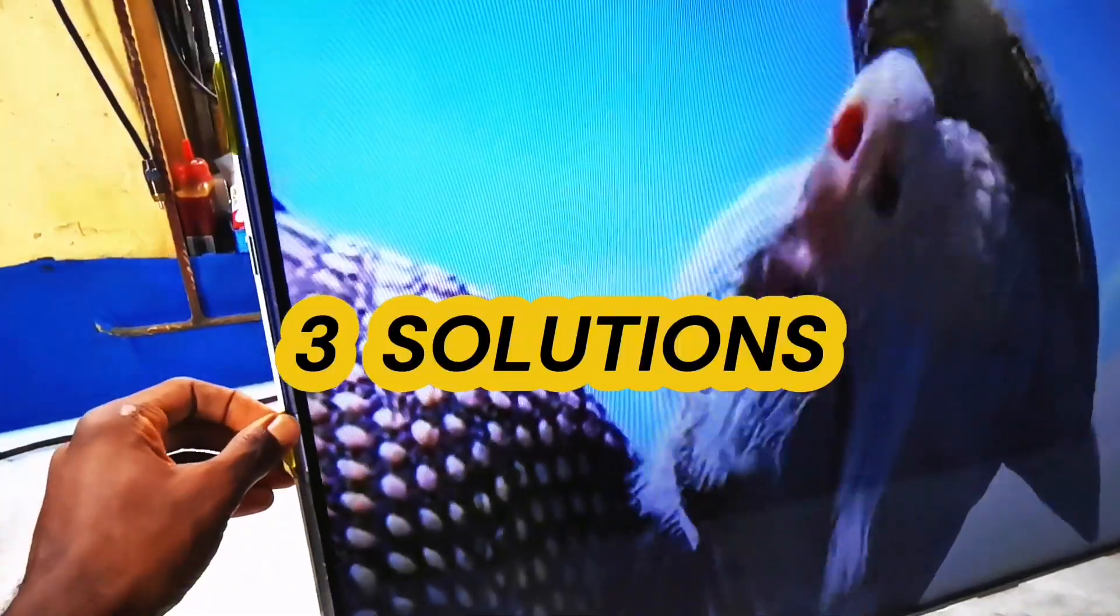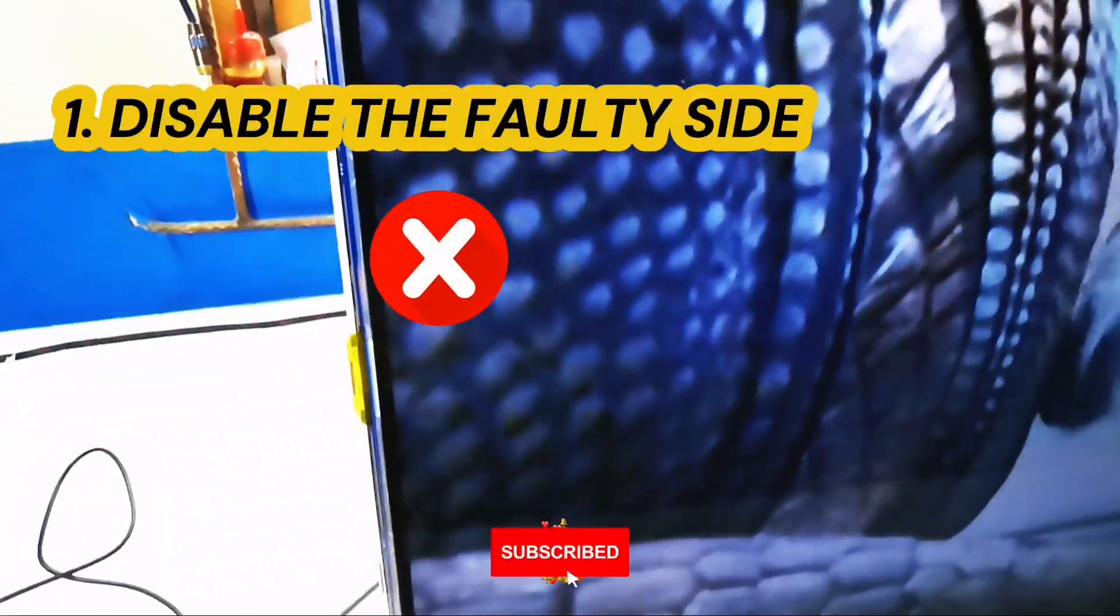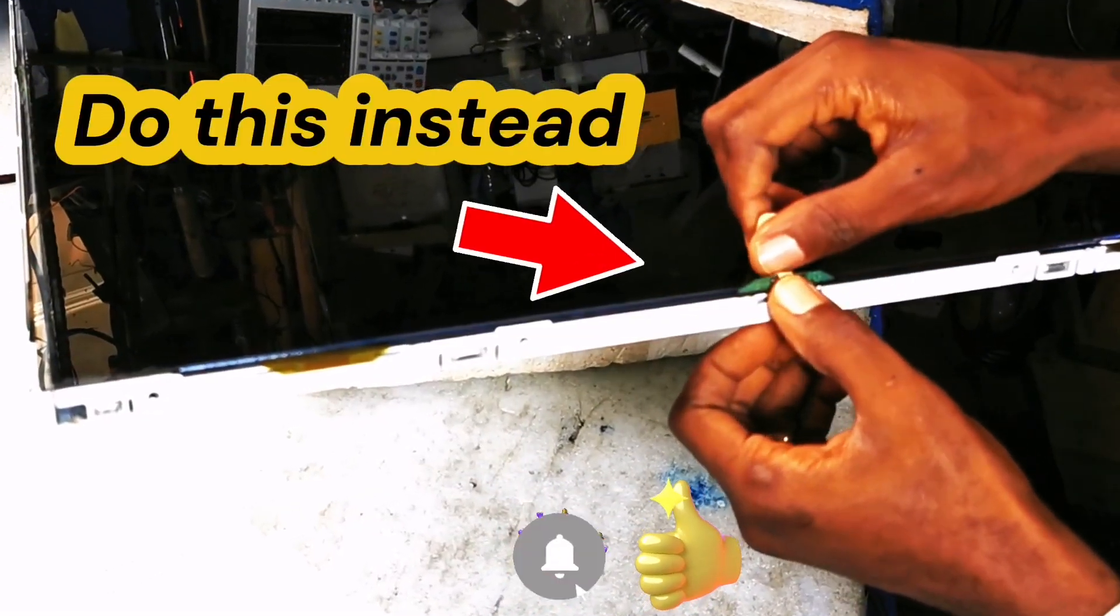What I'm about to explain now is crucial. There are three ways you can fix this problem. The most common way is to cut off the kidneys on the faulty side. Don't do that. Do this instead.